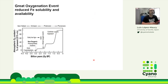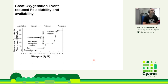Cyanobacteria also cause a big problem for iron and metal availability in general, because oxygenic photosynthesis releases oxygen, which oxidizes iron, making it much less soluble and less available. This happened early when cyanobacteria appeared and oxygenic photosynthesis started — it began locally oxidizing iron and precipitating it.